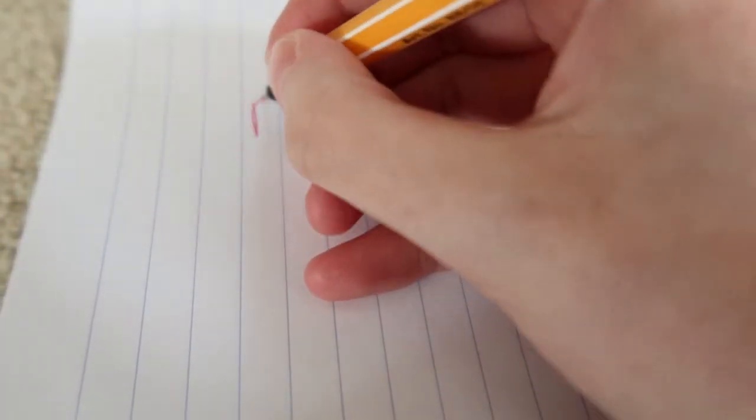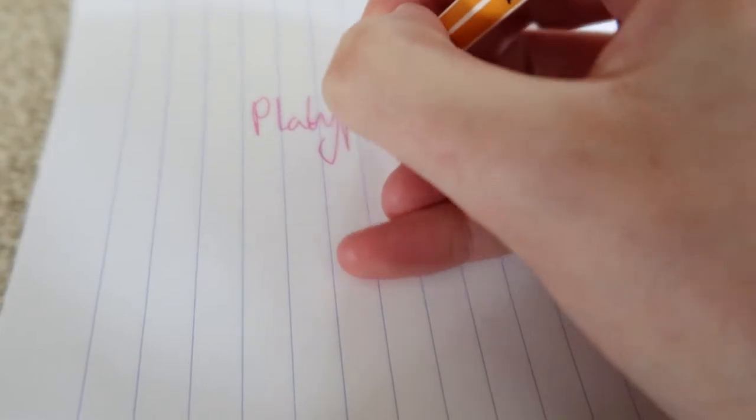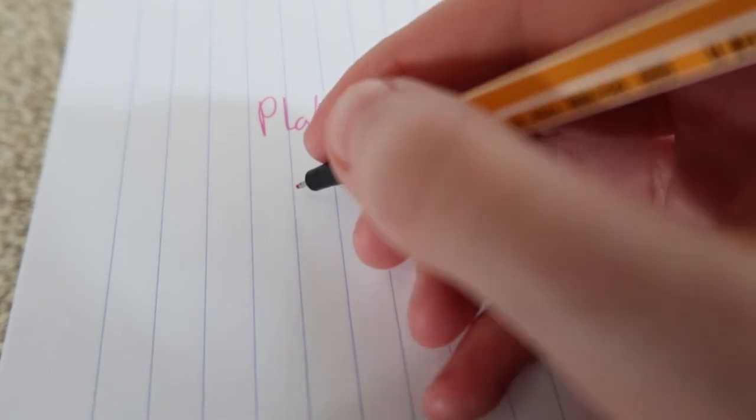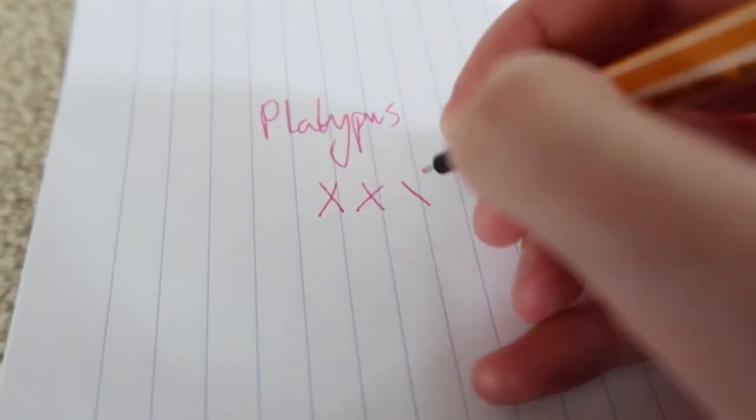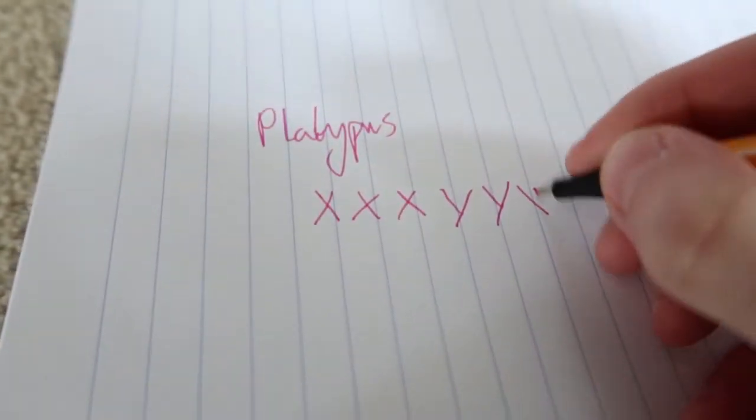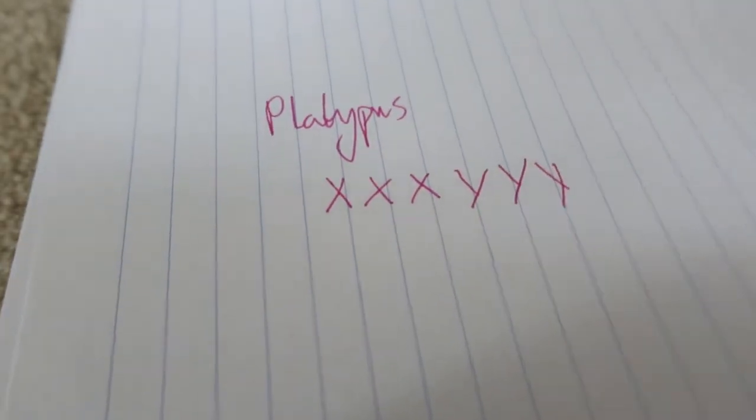It gets a lot more complicated. In some mammals, like the platypus, that very primitive marsupial, the male and female depends on how many X's and how many Y's they have. They have a lot of those chromosomes. That is a sort of dosage effect. It depends on the species, but there's even more methods.